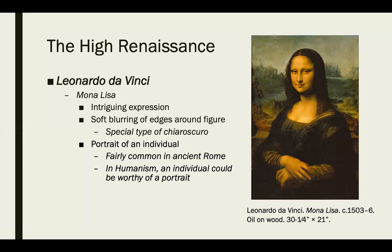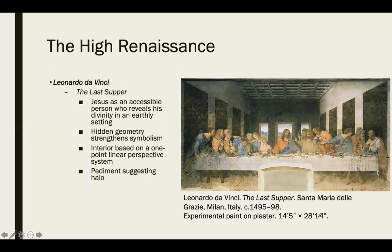In The Last Supper, there's a great use of linear perspective going over Jesus's head in the background — very symbolic. Jesus is seen as an accessible person who reveals his divinity in an earthly setting. There's hidden geometry that strengthens the symbolism — a triangle formed by Jesus's body creates a symbol of stability amid the chaotic figures around him. The vanishing point almost creates a halo to show his divinity. This is based on one-point linear perspective.